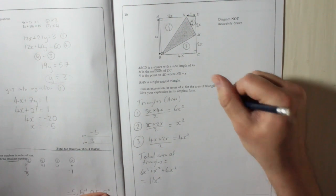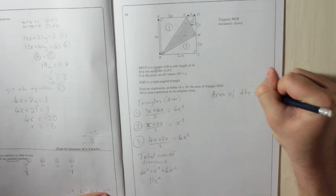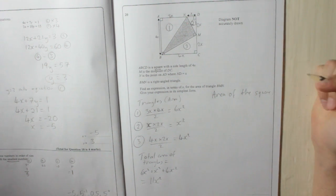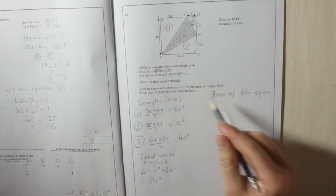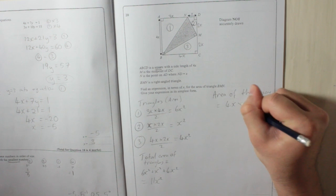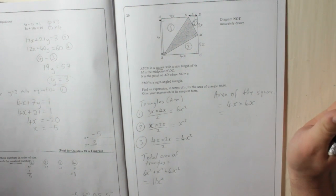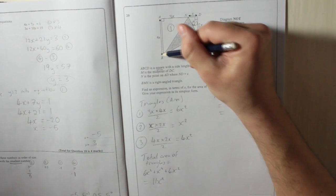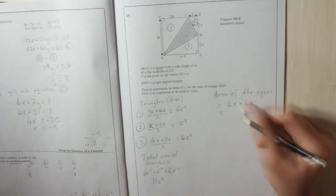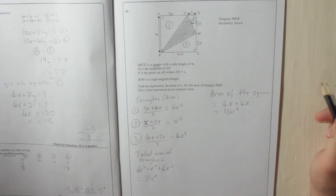So, now, let's work out the area of the square. That's the easy bit. Well, it's all the easy bit, really. So, the square, 4X times 4X. No dividing by 2, remember. It's a square. 4X times 4X. 4 times 4 is 16. X times X is X squared.